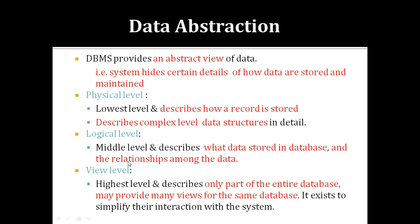The third level is the View Level — the highest level of abstraction. It describes only a part of the entire database and may provide many different views for the same database according to user requirements. Users can access different parts of the same database depending on what they need, and these views exist through their interaction with the system.